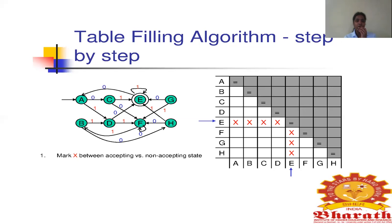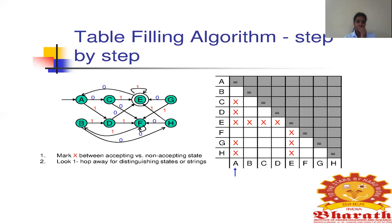I am going to mark all the pairs which have one accepting state and one non-accepting state. Since we have one accepting state E, we mark E,A then E,B then E,C then E,D, E,F, E,G, and E,H. These are all the pairs that include the final state E paired with a non-final state. Now we will go on to the next step.